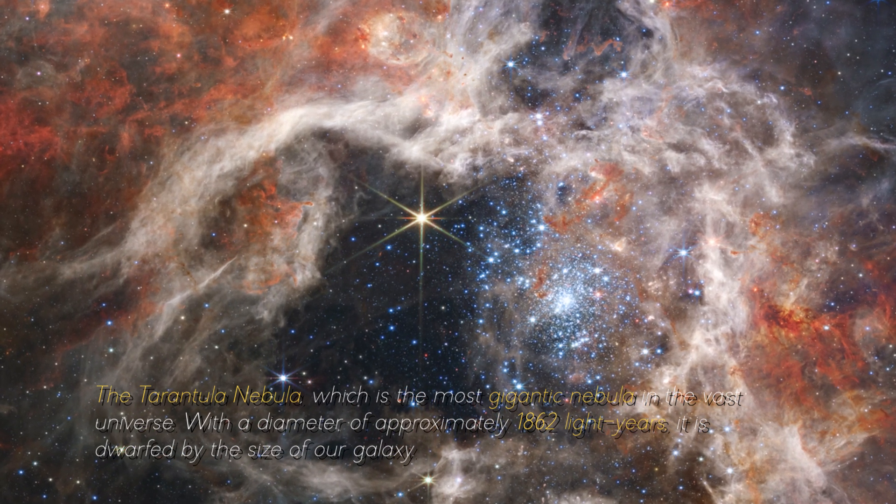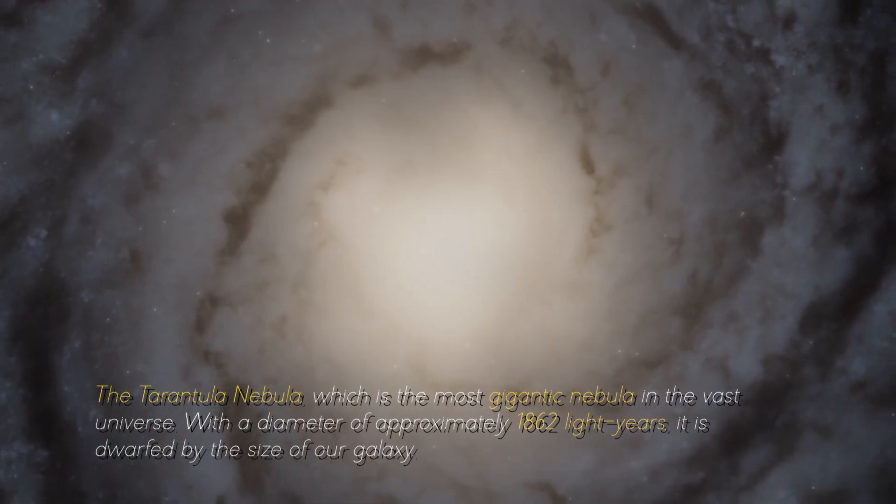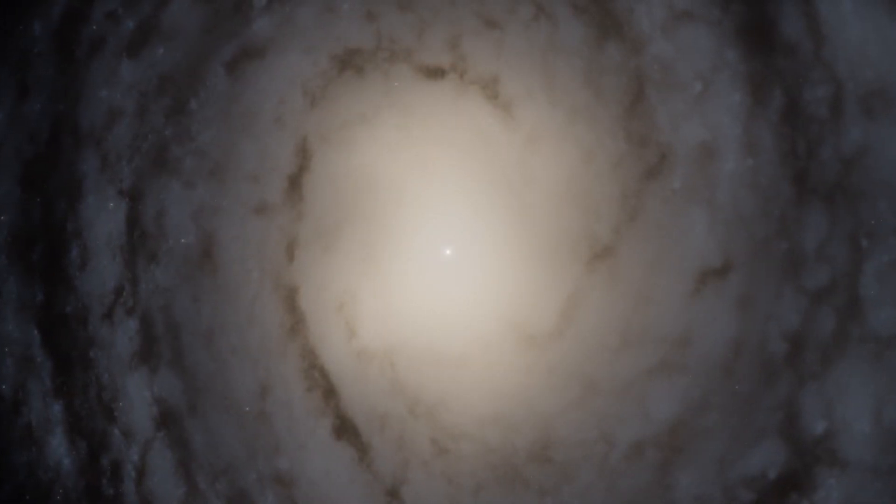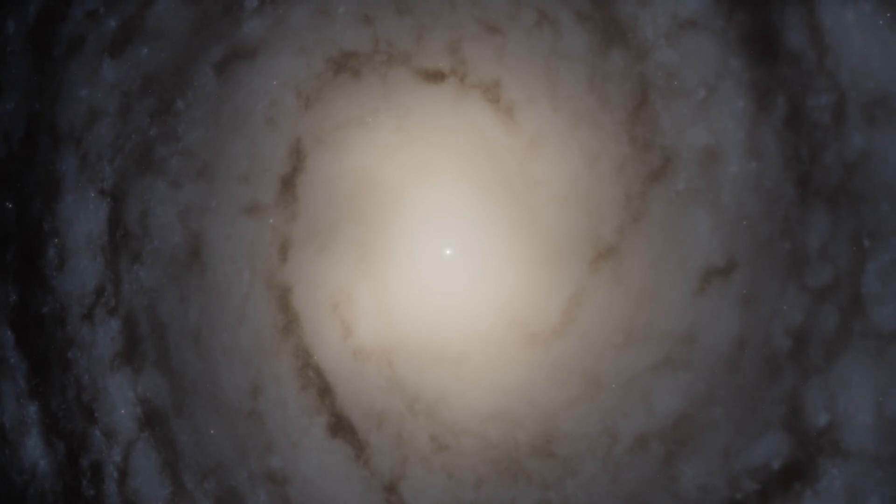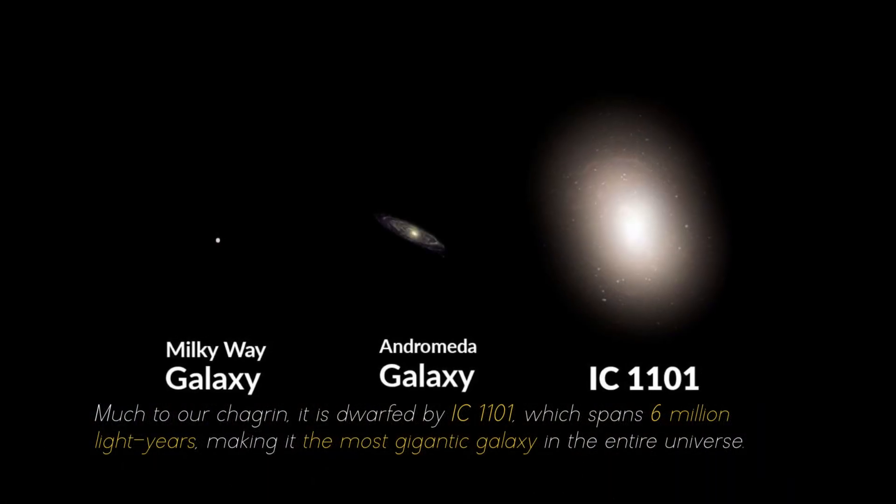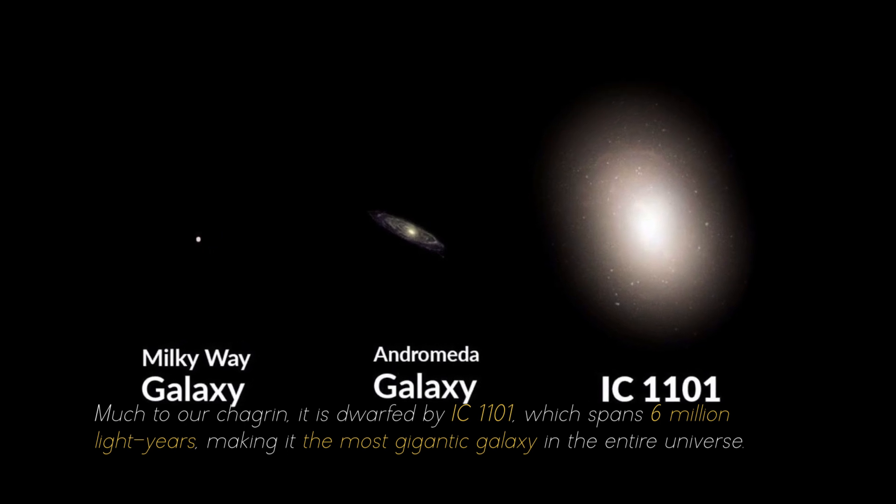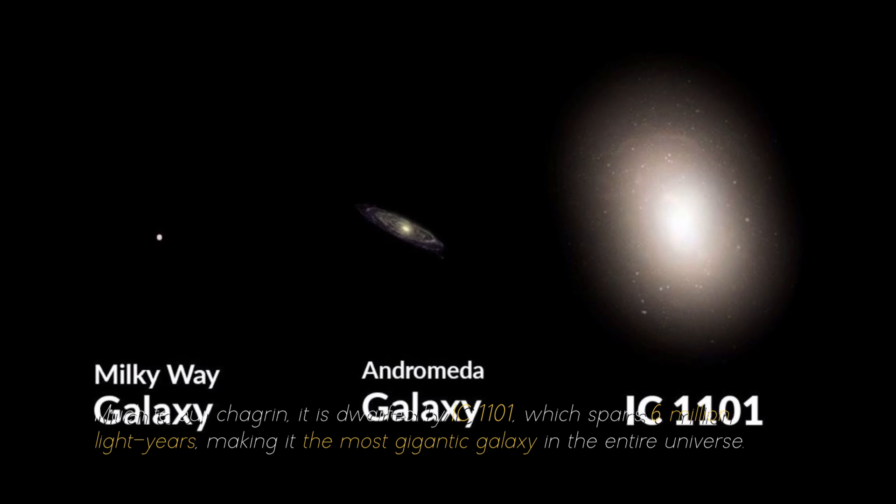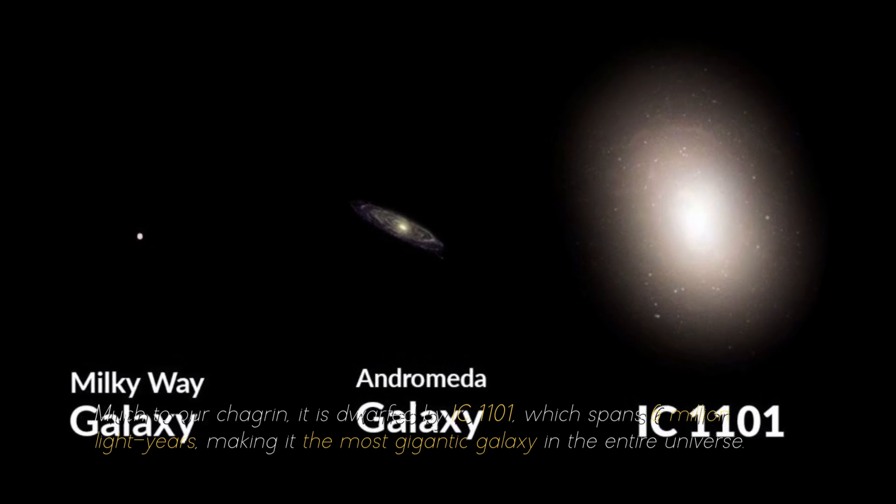It is dwarfed by the size of our galaxy, which spans some 105,700 light years. Much to our chart range, it is dwarfed by the IC 1101, which spans 6 million light years, making it the most gigantic galaxy in the entire universe.